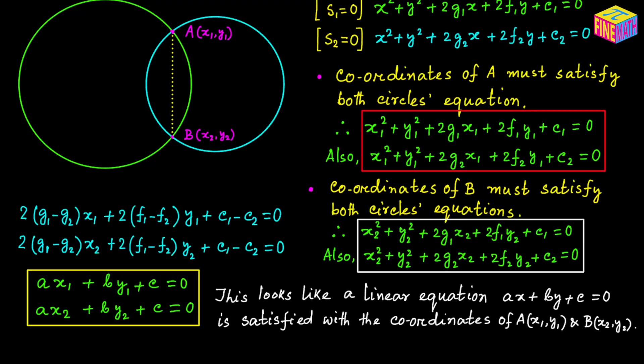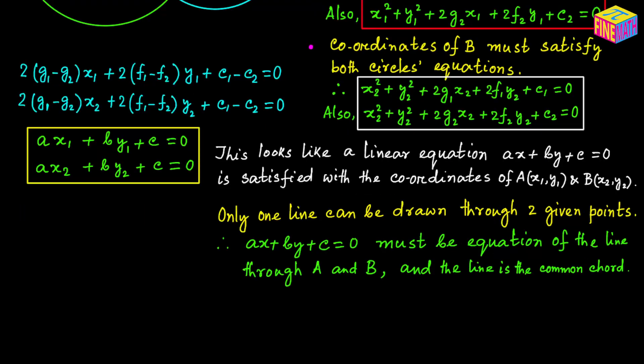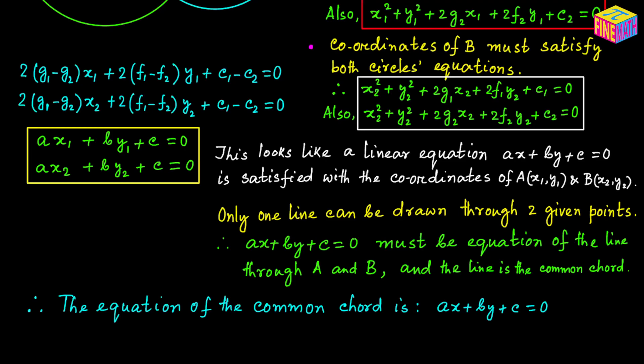Through two different points, how many straight lines can we draw? From geometry, we know we can draw only one straight line through two given points. So if the two given points are A and B, we can draw only one straight line, and that straight line will be nothing but the common chord. We can see the equation of a straight line that satisfies the coordinates of both A and B. So we can safely assume that the equation of this common chord is ax plus by plus c equals 0, where a equals 2 times (g sub 1 minus g sub 2), b equals 2 times (f sub 1 minus f sub 2), and c equals c sub 1 minus c sub 2.